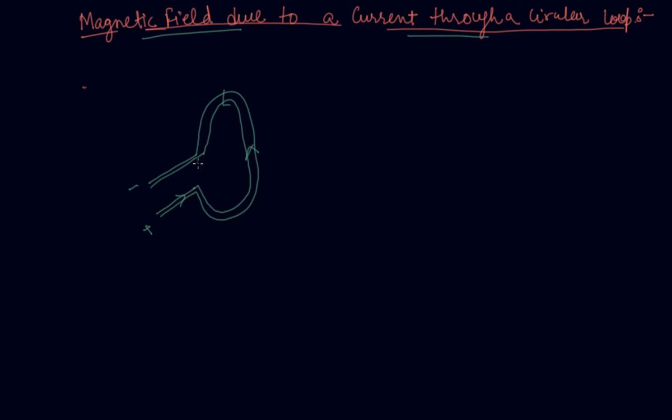So how will the magnetic fields look like? In the centre the magnetic field will be from south to north and towards the end it is like this.